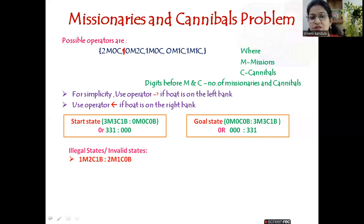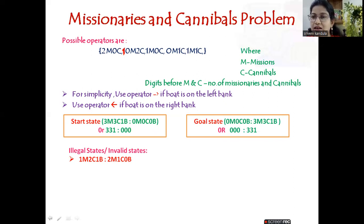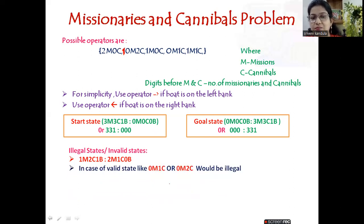On the other bank, if we have two missionaries and one cannibal, they are not outnumbered. But if there is no boat, they cannot travel to the other side to get other persons — at any time, one person must go with the boat and either leave or return with it. Also, states like zero missionaries and one cannibal or zero missionaries and two cannibals can also be illegal — we will see why shortly.